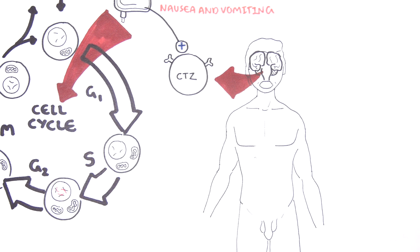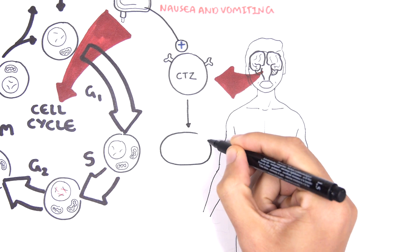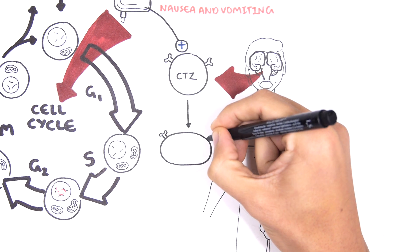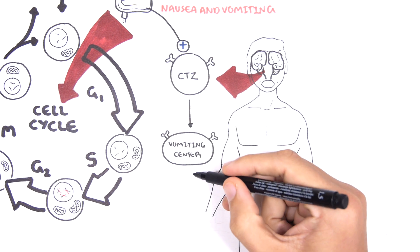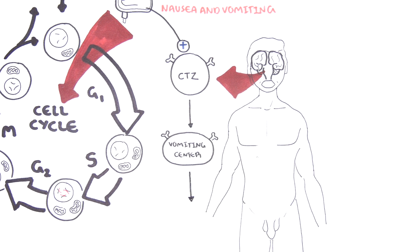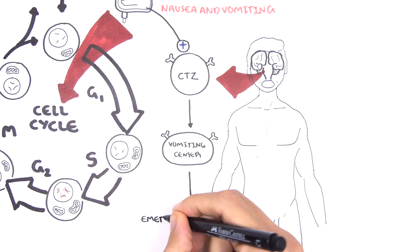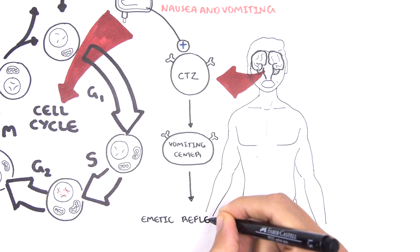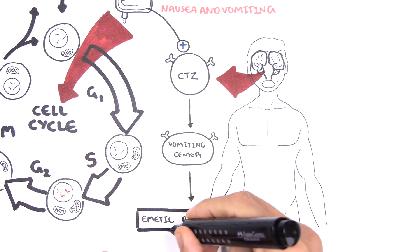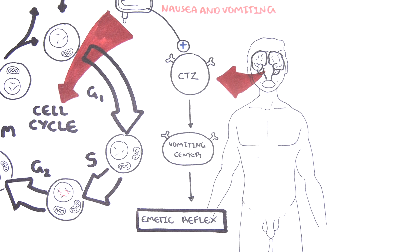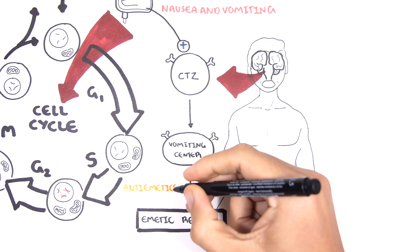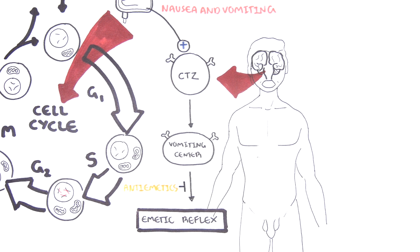When the chemoreceptor trigger zone is stimulated, it stimulates another area near it called the vomiting center. The vomiting center then induces the emetic reflex — the vomiting reflex. One way to manage this is to give patients undergoing chemotherapy anti-emetics.